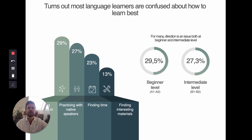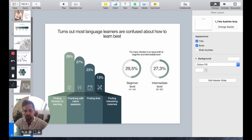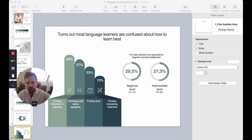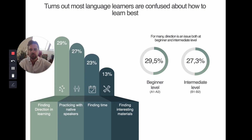What turns out is that the key issue most language learners have is not grammar or pronunciation, or even speaking with native speakers — though that is a big problem. Even more than that, language learners are confused about how to learn best, how to find a direction in language learning, and how to keep progressing in their studies.